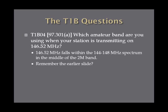Which amateur band are you using when your station is transmitting on 146.52 MHz? This goes back to that earlier slide that you had to memorize. The 2-meter band falls between 144 and 148 MHz. So 146.52 is in the 2-meter band.